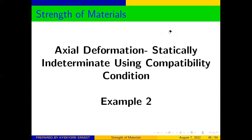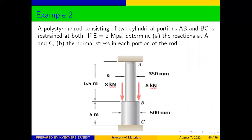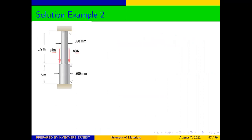Let's look at our question and see how we are going to solve it. We have a polystyrene rod consisting of two cylindrical portions AB and BC, restrained at both ends. If it is two megapascals, determine the reaction at A and C and the normal stress in each portion of the rod.